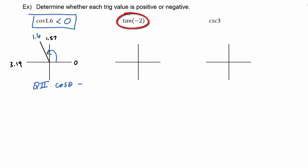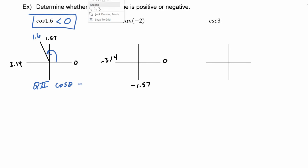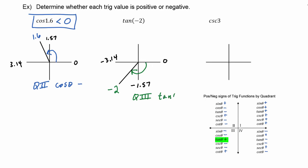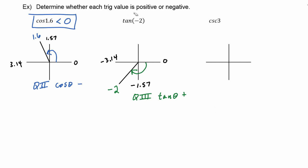For tangent of negative 2, we label in the negative direction: 0, negative 1.57, negative 3.14. Theta equals negative 2 falls between these values, placing it in quadrant 3. In quadrant 3, tangent of theta is positive, so tangent of negative 2 is greater than zero.